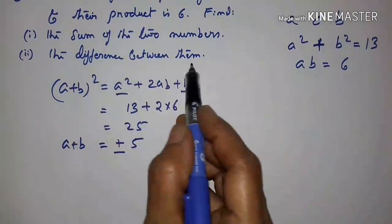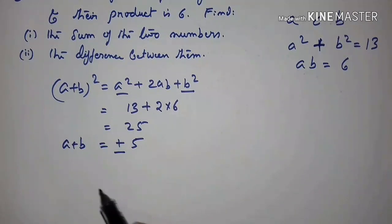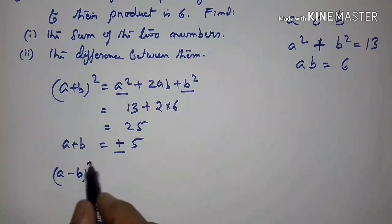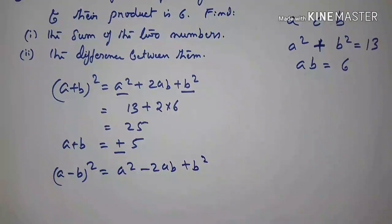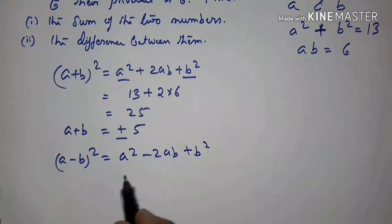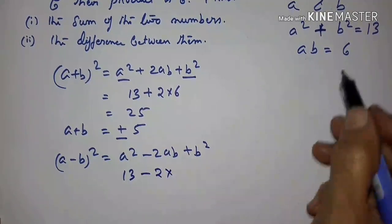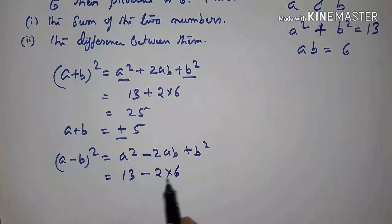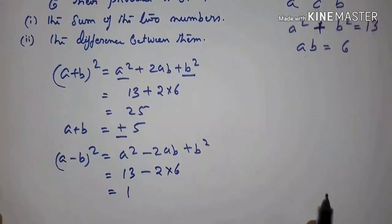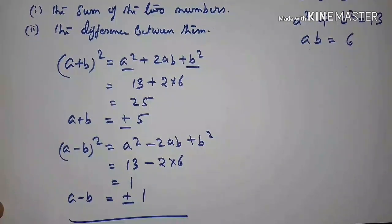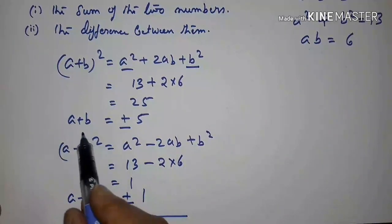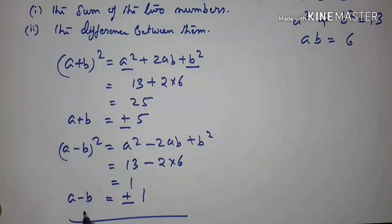Now we find A minus B. Using the formula: A minus B, the whole square, equals A squared minus 2AB plus B squared. Substituting, A squared plus B squared is 13, and minus 2 into AB is minus 12. So A minus B squared equals 13 minus 12 equals 1. Taking the square root, A minus B equals plus or minus 1. This is the sum of the two numbers and this is the difference between them.